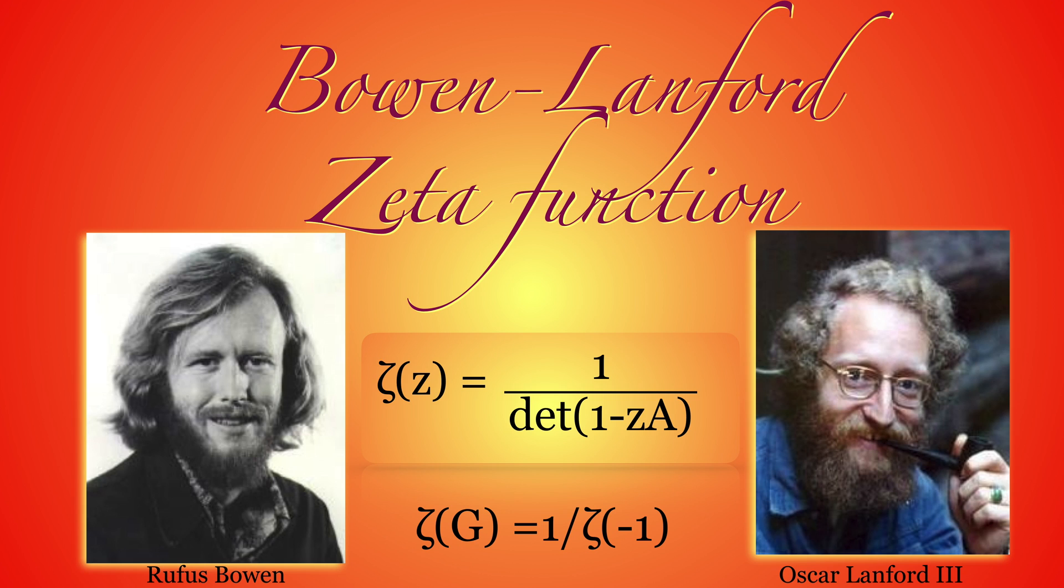This result has connections with other constructs. The Fredholm determinant is a special value of a Bowen-Lanford zeta function. This zeta function is a special case of a dynamical zeta function as defined by Artin and Mazur and which was further developed by Ruelle. In the case of a graph, the zeta function is associated with the Markov chain defined by the graph. The unimodularity theorem is an example relating the function value with the topology.